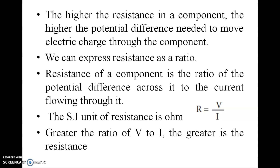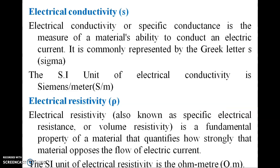Resistance is measured in ohms (Ω). Electrical conductivity, or specific electrical conductance, is a measure of a material's ability to conduct electric current. It is commonly represented by the Greek letter sigma (σ). The unit is Siemens per metre (S/m). Electrical resistivity, also known as specific electrical resistance or volume resistivity, is a fundamental property that quantifies how strongly a material opposes the flow of electric current.